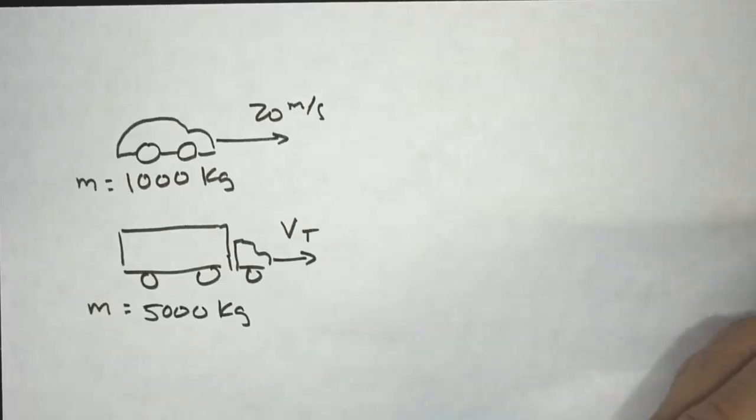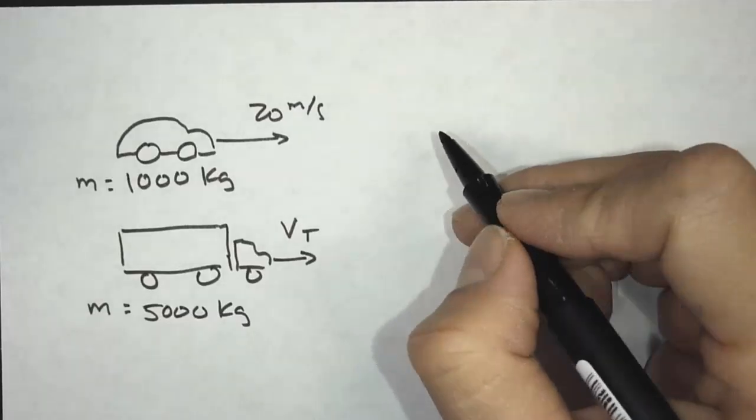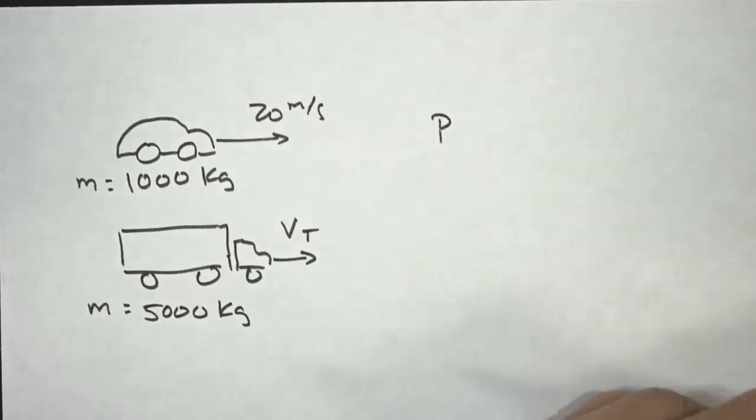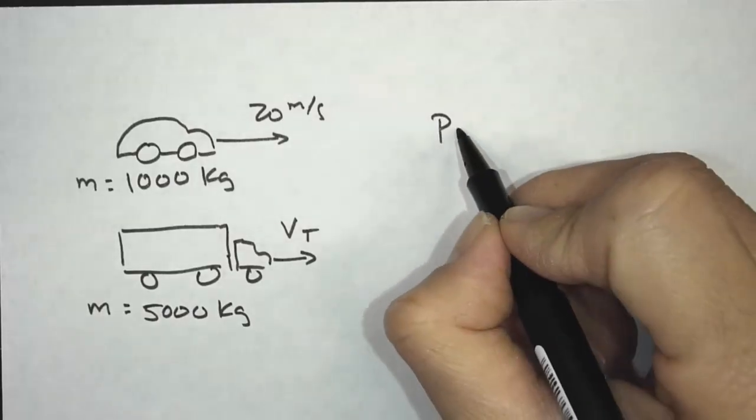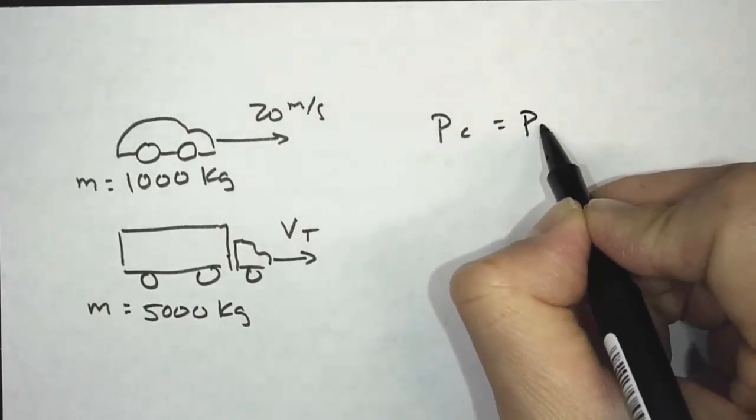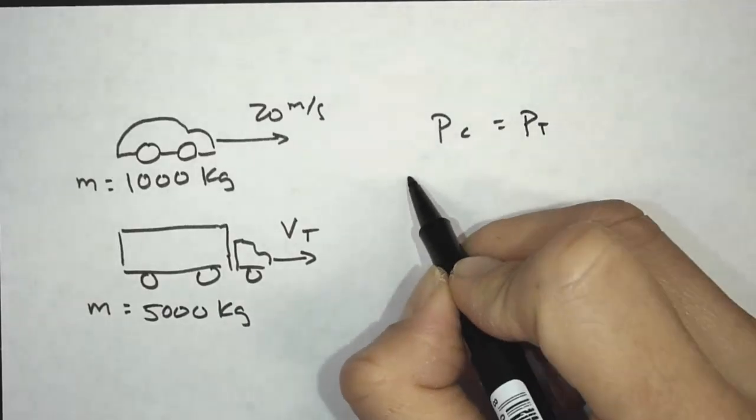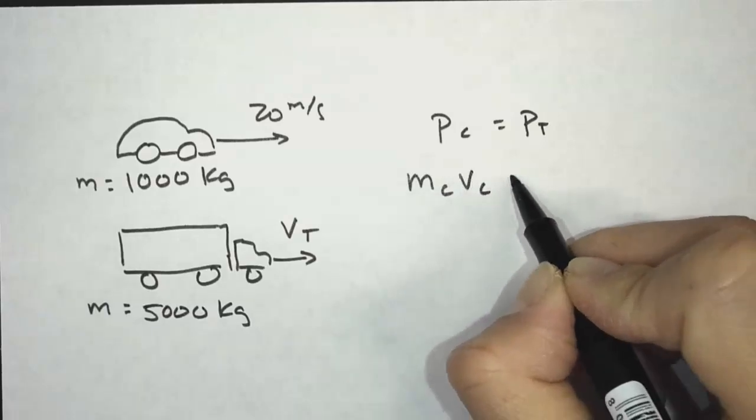But we know that they have the same momentum. So can an object have more mass and have the same momentum of an object that has less mass? And the answer is yes. And we're going to figure out what that velocity would be so that they have the same momentum. So the momentum of the car equals the momentum of the truck. So that is given. They have the same momentum. And we know momentum is mass times velocity.